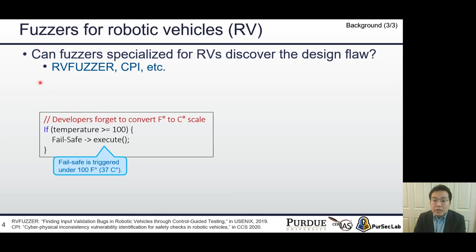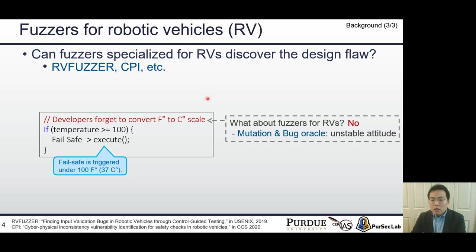On the other hand, many researchers recently developed fuzzing works for robotic vehicles. For example, RV fuzzers and CPS fuzzers can detect bugs when the bugs lead to unstable attitude, such as unstable RPY angles. Then, can these fuzzers specialized for RVs discover such a design flaw? Unfortunately, the answer is still no. This is because the temperature scale issue does not directly relate to the RVs attitude.